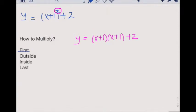For first, we take the first element in the first quantity and multiply it to the first element in the second quantity. In this case, x times x.